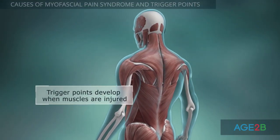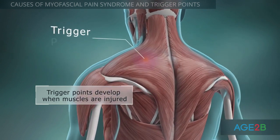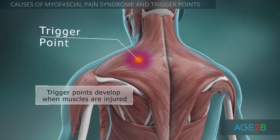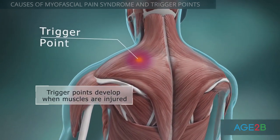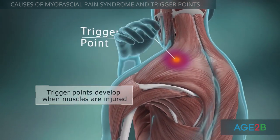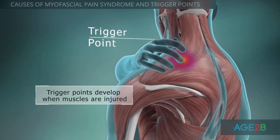Trigger points are caused by muscle injury. Muscles can be injured suddenly in accidents, or damage can occur slowly due to repeated movements or poor posture.